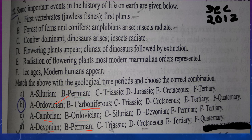Statement C: conifers dominant, dinosaurs arise. We can blindly say that it is Triassic — dinosaurs arise in Triassic, dinosaurs dominant in Jurassic, extinction of dinosaurs in Cretaceous. So conifers dominant and dinosaurs arise is Triassic. Looking at options: option A — C is Triassic, option B — C is Triassic, option C — Silurian, option D — also Triassic. So three options have Triassic there.